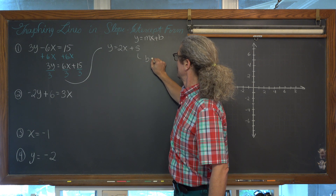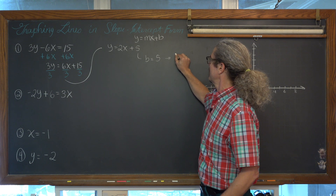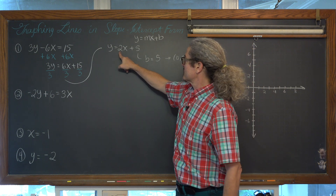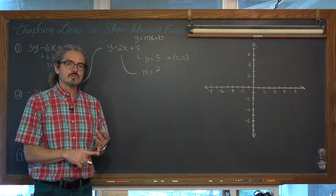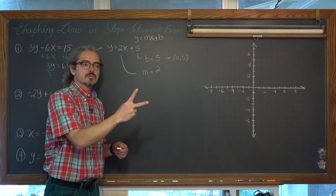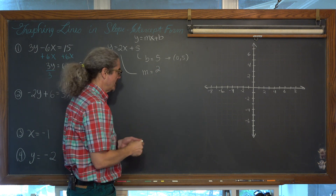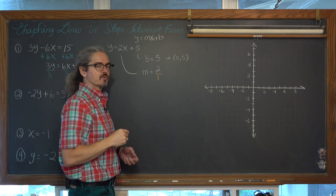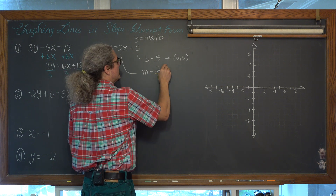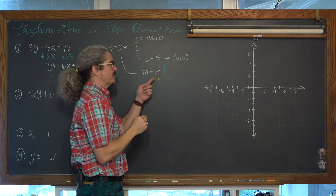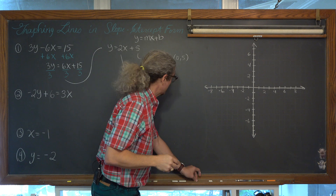So our y-intercept, the value of b, is equal to 5 — or the coordinate (0, 5). The slope is equal to 2. Slope is rise over run, so I need two numbers to direct my movement. I'll write that 2 as 2 over 1, so I can see that I'm going up 2 and running over 1 space. Since the slope is positive I'll plot my next point after locating my position on the y-axis. We're going to do this first line in blue.